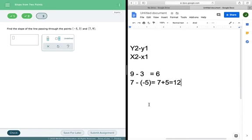That's the same thing as 7 plus 5, which is equal to 12. And then so you wind up with 6/12, which is, think about it, 6 goes into 12 two times, so I can simplify that to 1/2. And what I want to do before we click check on this is I want to do this doing it the other way. I want to see what happens if I do y1 minus y2 over x1 minus x2.